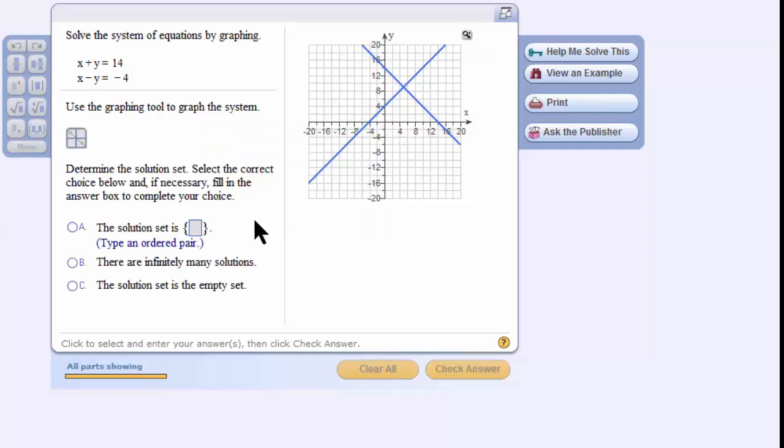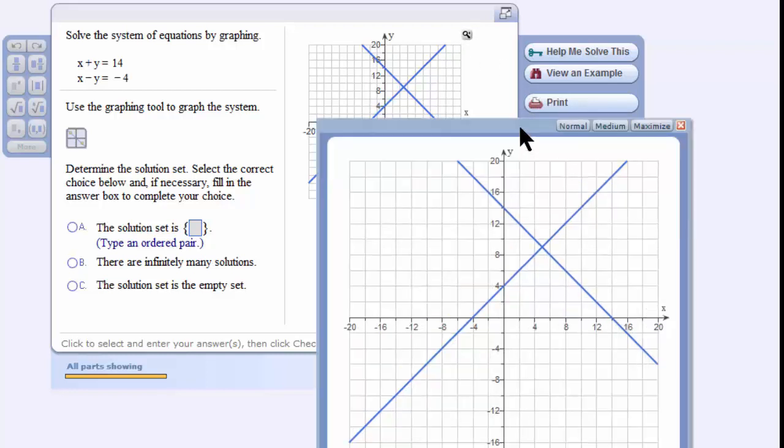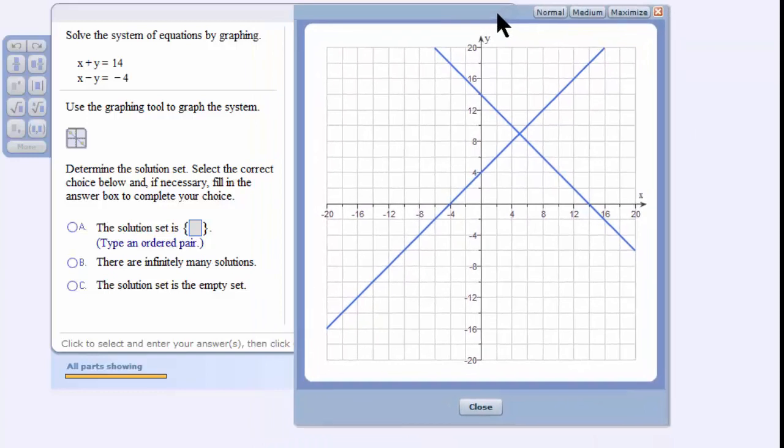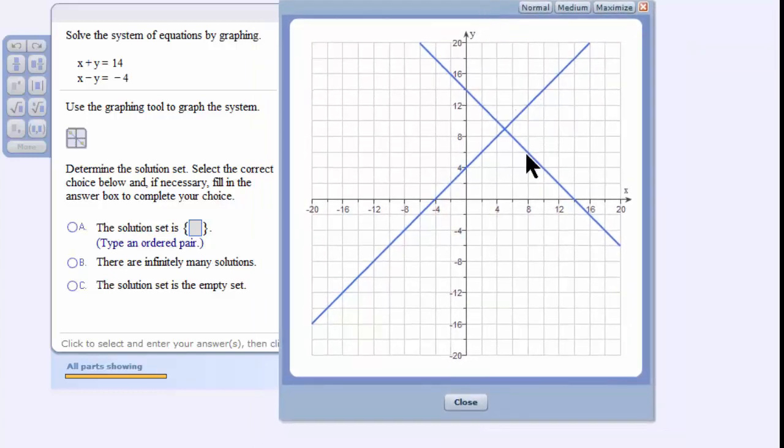Now we have to look at the graph and try to figure out what is the point of intersection. Again, I'm going to make the graph bigger so I can see it. That's the bad thing about solving a system by graphing is you kind of have to look and guess.